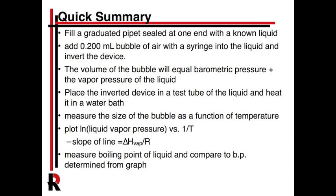This lab has a little bit of specialized equipment. It's a sealed pipette with measurements on the side. We're going to fill that with a known liquid, and then inject exactly 0.20 milliliters, or 200 microliters, of bubble of air into the top. It'll be upside down so the bubble will be trapped under the liquid. The volume of the bubble then equals the barometric pressure plus the vapor pressure from the liquid when it's evaporated into that headspace.